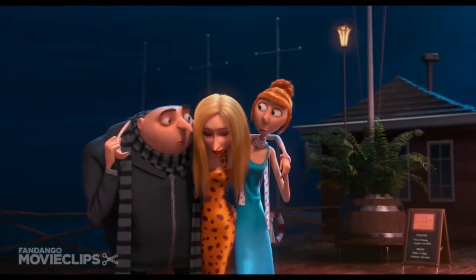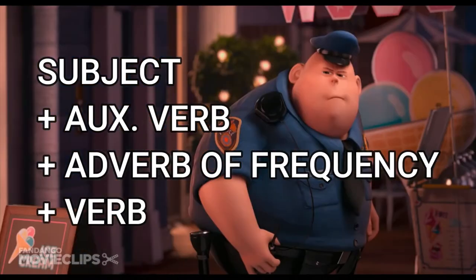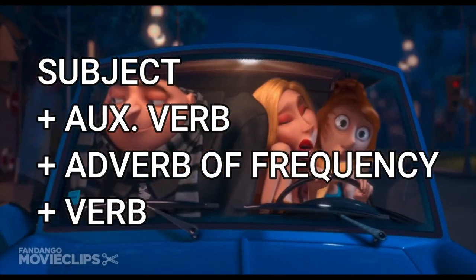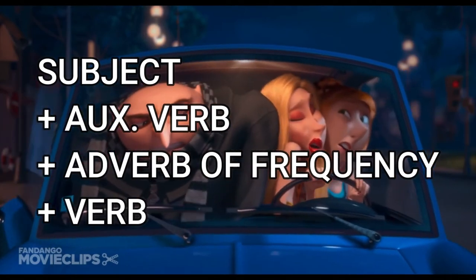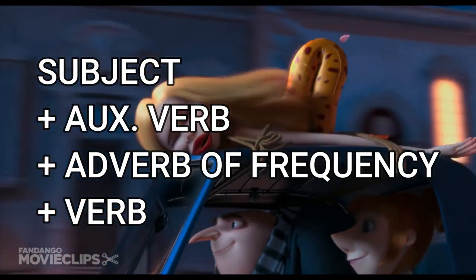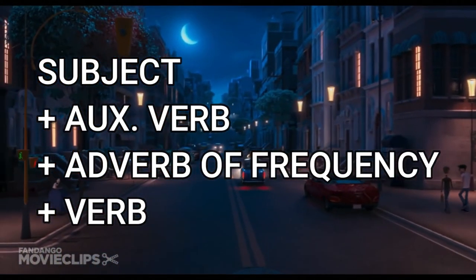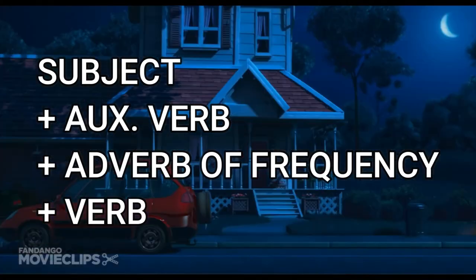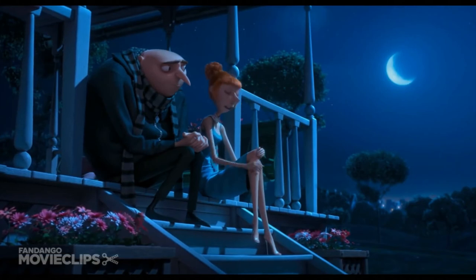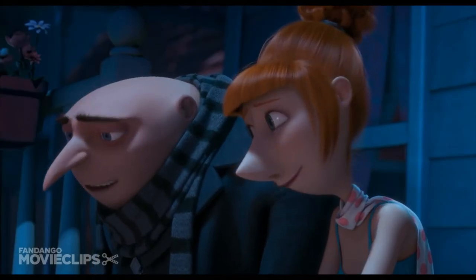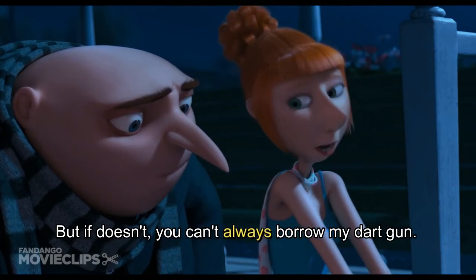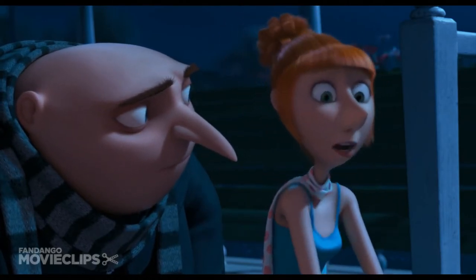Luego tenemos la forma: subject plus auxiliary verbs — que son los verbos que utilizamos para formar oraciones negativas e interrogativas, también tiempos compuestos continuos o perfectos, y la voz pasiva — plus the adverb of frequency, and finally the main verb. For example: 'You can always borrow my dart gun. I had to use it on one or two dates myself.'